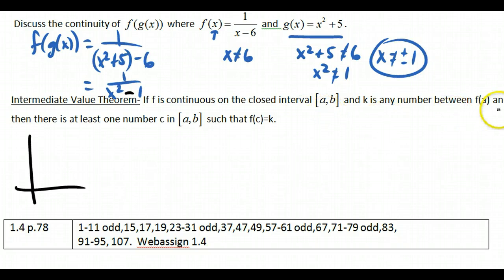If f is continuous on a closed interval from a to b, and k is any number between f of a and f of b, then there is at least one number c in [a,b] such that f of c is equal to k.